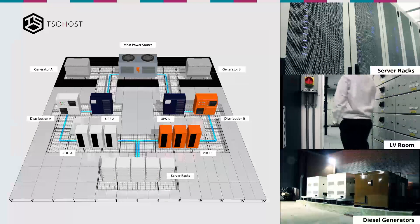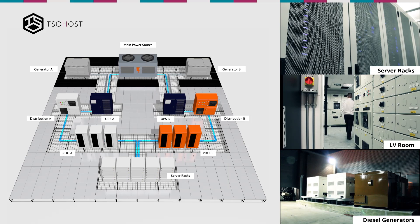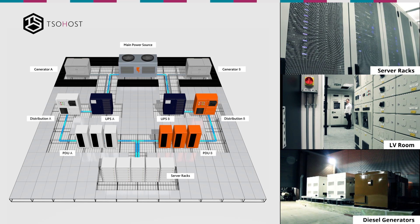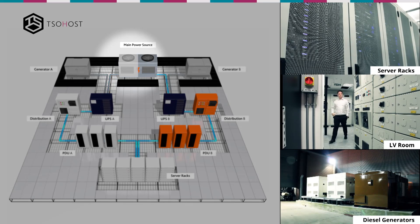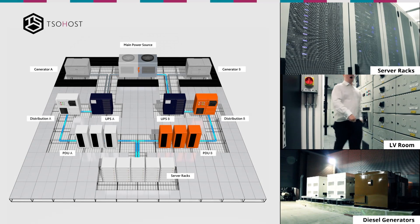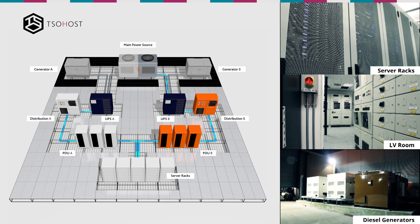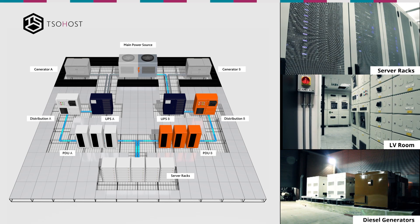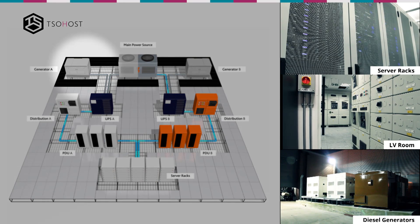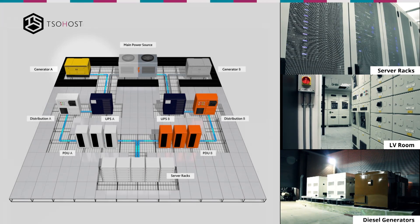First, we isolate the mains power to the A side. The servers are fed directly from the UPS and will see no drop in power. However, you may hear the air handlers spin down as these are fed from the non-critical supply. The A side generator changeover controller will now send the generator a signal to start. The generator comes up to full power and signals the changeover controller that it is ready to accept load. The changeover controller then transfers the A side critical load to the generator.